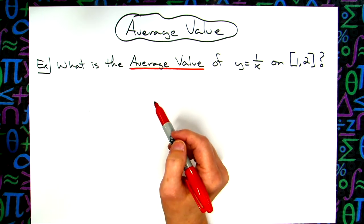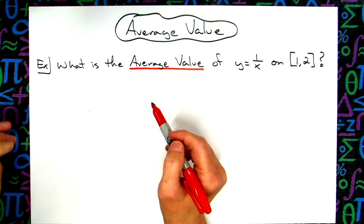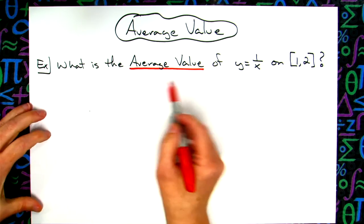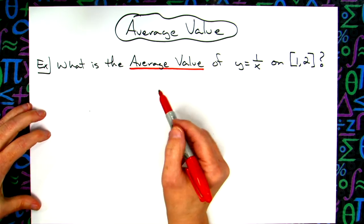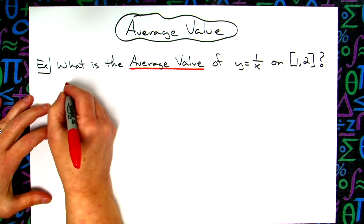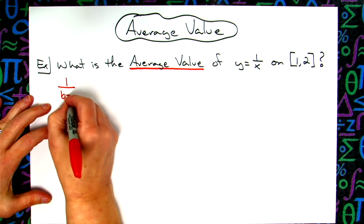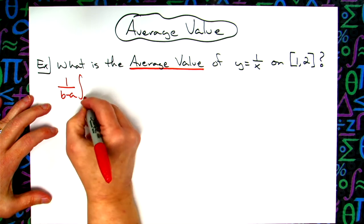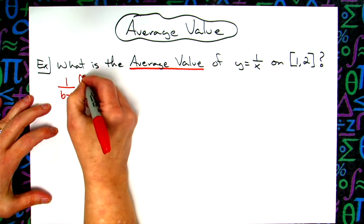This is not the average rate of change formula that you learned in pre-calc. The average value of a function—you're going to put that 1 over (b-a) in front of your integral. So it's the 1/(b-a) in front of the integral that's going from a to b of your function.